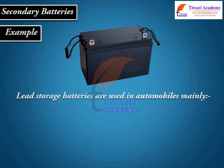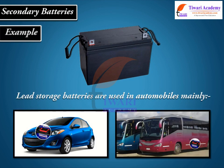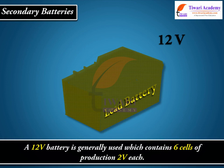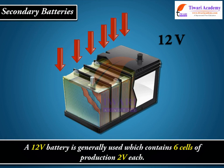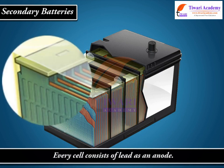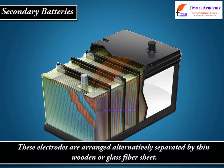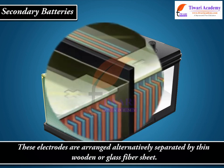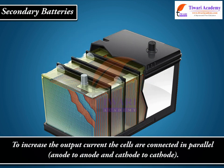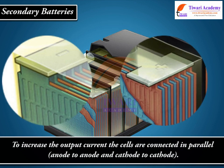Lead storage batteries are used mainly in automobiles, for example cars and buses. A 12-volt battery is generally used, which contains 6 cells of 2 V each. Every cell consists of lead as an anode and a grid of lead packed with lead oxide as the cathode. These electrodes are arranged alternately, separated by thin wooden or glass fiber sheets. To increase the output current, the cells are connected in parallel — anode to anode and cathode to cathode.